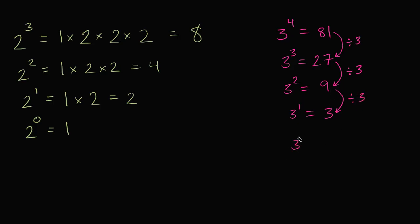So based on this, what do you think 3 to the 0 power should be? Well, the pattern is every time we decrease our exponent by 1, we divide by the base. And so we should divide by 3 again, would be the logic if we follow that pattern. And so 3 divided by 3 would get us 1 again.